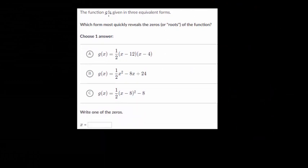So now we're given the function g again in these three equivalent forms and we need to know which of these forms reveals the zeros or the roots of the function. So remember the zeros, that's when the function is equal to zero, or in other words these are the x-intercepts. So which form reveals that really quickly? Well, that's the factored form.